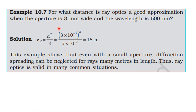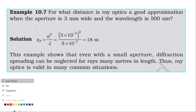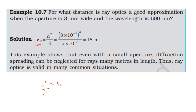We have this topic: learned example sounds. For what distance is ray optics a good approximation when the aperture is 3 millimeter wide and the wavelength is 500 nanometer? The Fresnel distance formula is: distance equals a squared divided by lambda. With aperture a equal to 3 millimeter.